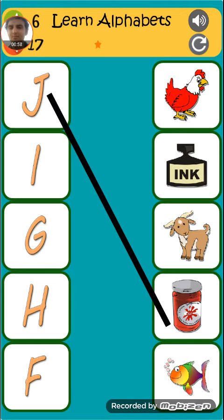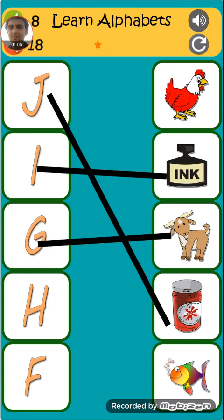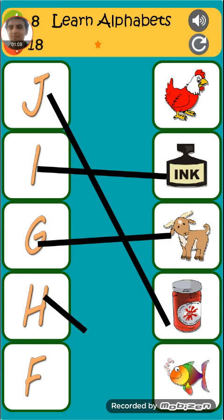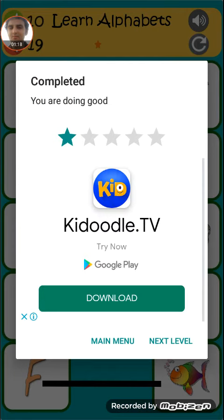J is for jam. I is for egg. G is for goat. H is for hen. F is for fish.